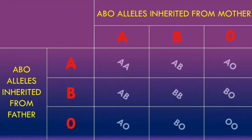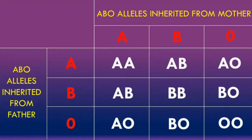Here are all the possible genotypes that the offspring can have. There are overall six possible genotypes: AA, AO, BB, BO, AB, and OO.